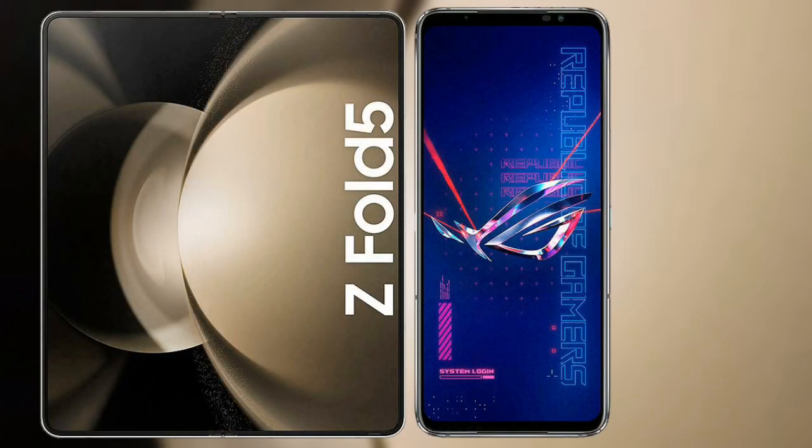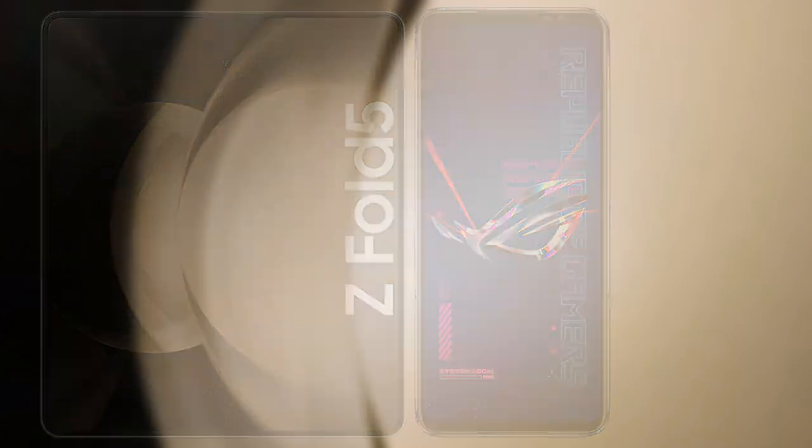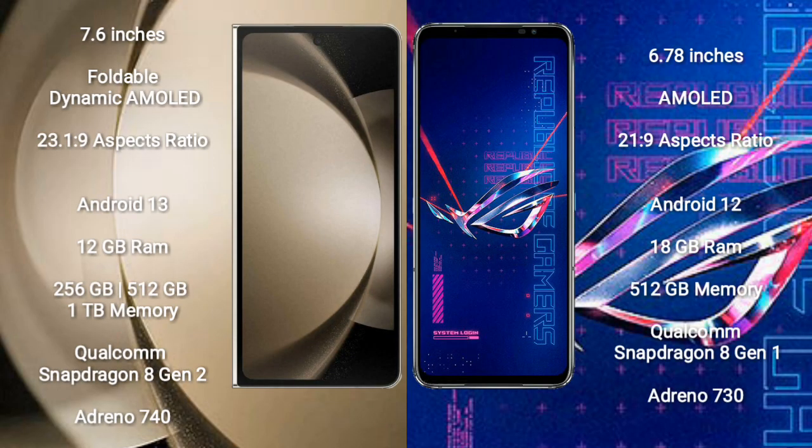I will compare the new Samsung Galaxy Z Fold 5 with Asus ROG Phone 6 Pro. Samsung Galaxy Z Fold 5 comes with a 7.6-inch foldable dynamic AMOLED display with an aspect ratio of 23.1:9. Asus ROG Phone 6 Pro has a 6.78-inch AMOLED display with an aspect ratio of 21.9.